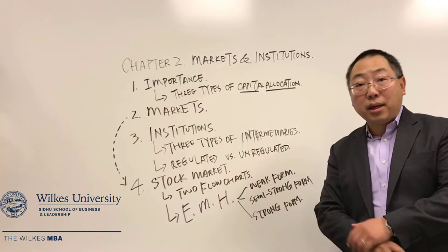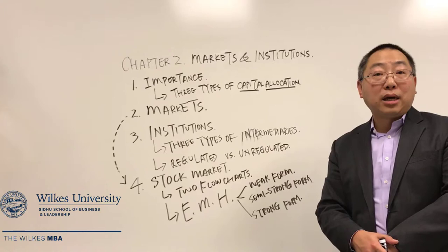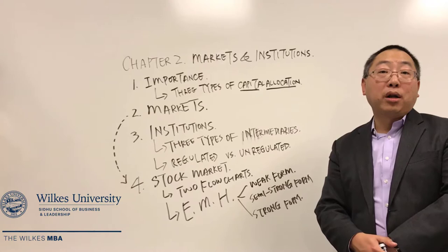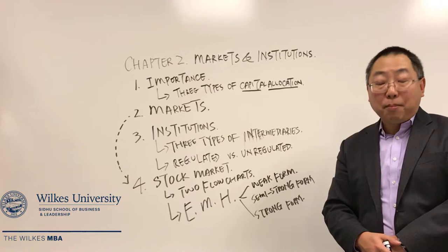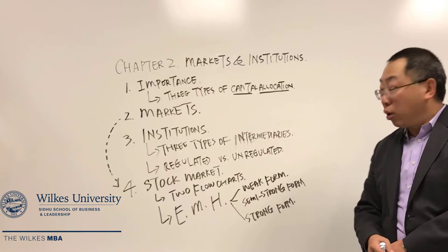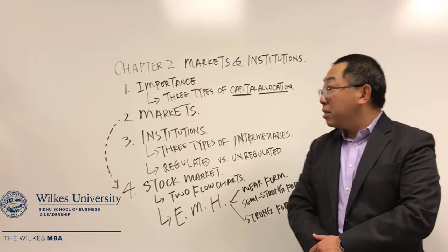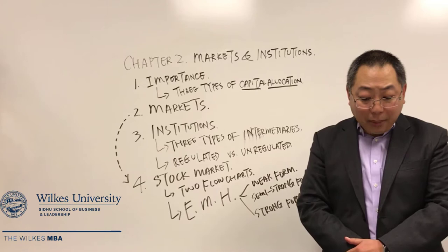The key thing to distinguish between them is what information is incorporated into the stock price. For the weak form, the current stock price has only past information. In the semi-strong form, in addition to past market information, the current stock price also includes current public information. In the strong form, we include past information, current public information, and current private information.